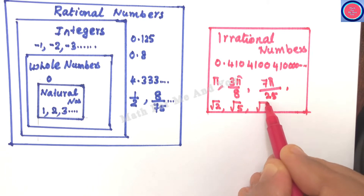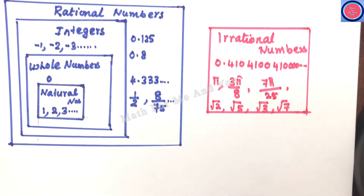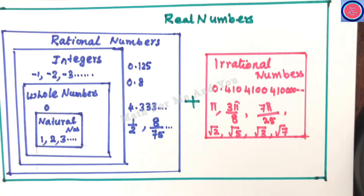But √4 is not irrational — it is rational because 4 is a perfect square. Finally, when we join rational numbers and irrational numbers we get the largest set of numbers, known as the set of real numbers, which contains all the numbers we have discussed.